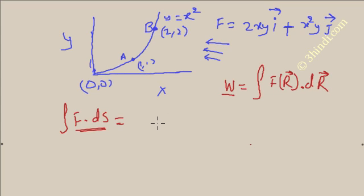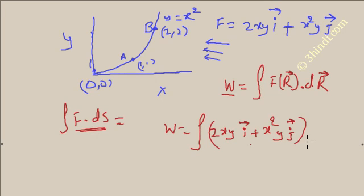If you expand it, W is equal to twice xy unit vector i plus x square y unit vector j, dot dr. Dr means dx i unit vector i plus dy j unit vector j.